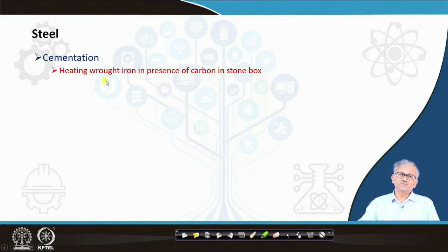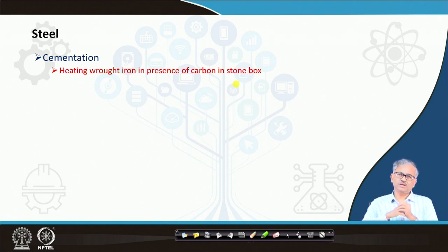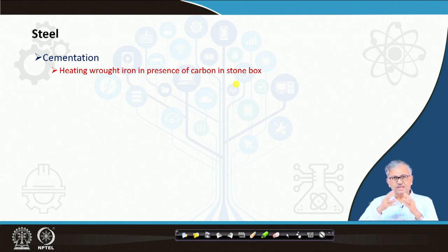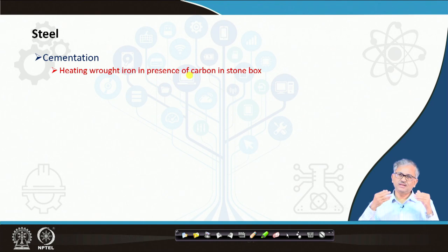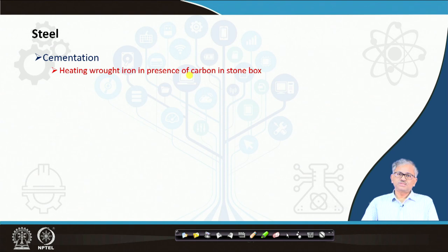Too much carbon is again not good because it makes the iron very brittle. Up to 2% carbon you can have different kinds of steel — mild steel, medium carbon steel, and high carbon steel — and those are malleable steel with high strength. The wrought iron had very low carbon, so strength was not very high. Then what is cementation? It is heating the wrought iron in the presence of carbon in a stone box — the cementation process. You increase the carbon into the wrought iron, but carbon will increase in the surface area only, because penetration to the center takes a lot of time.